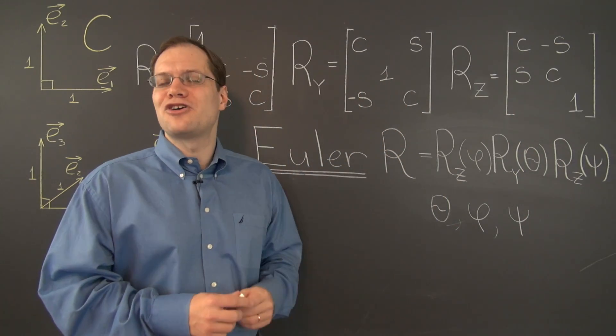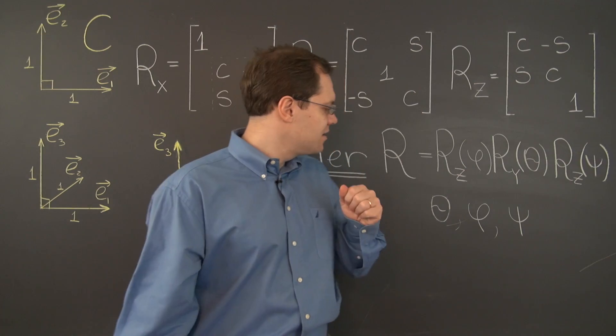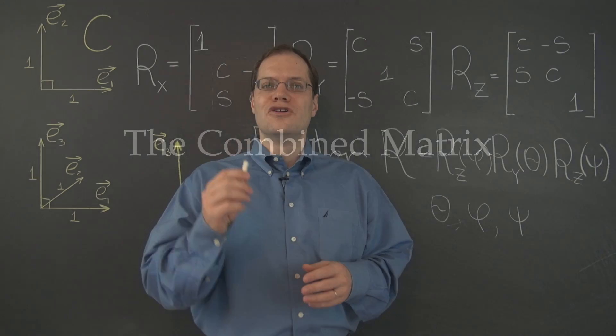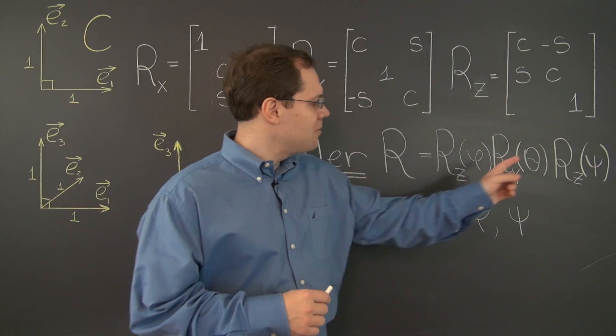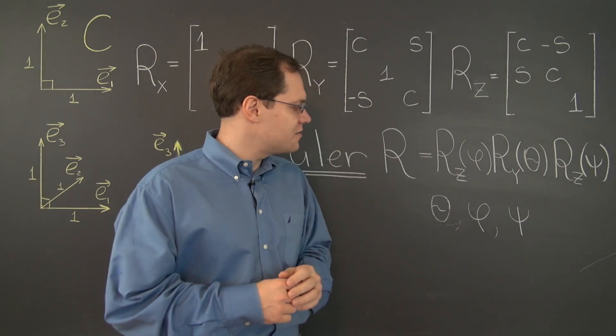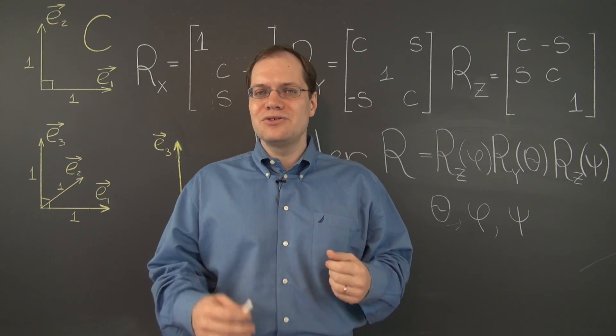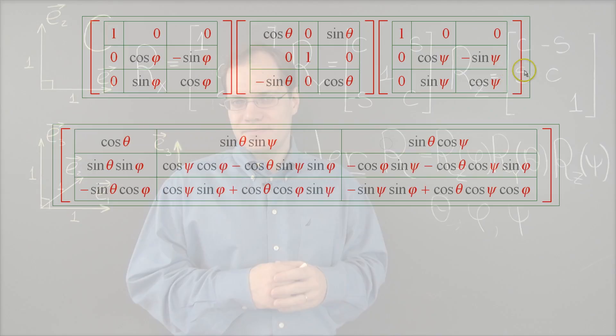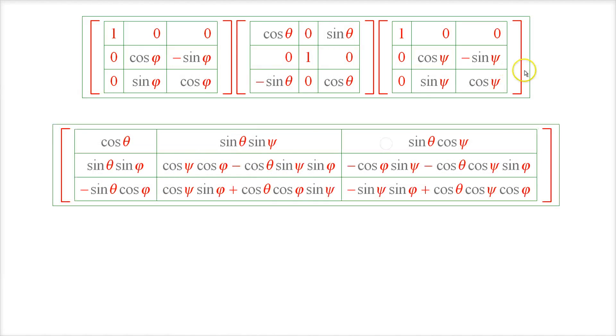So, we have accomplished our goal. Now, I will make, I think, three notes about this product. Note number one. If we multiply these three matrices together, then we will actually be able to see what the matrix R looks like explicitly. And it will be this matrix.